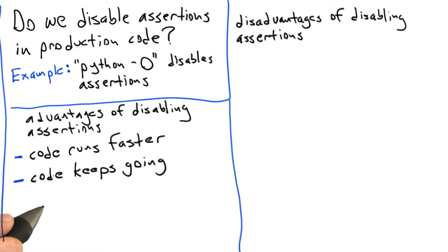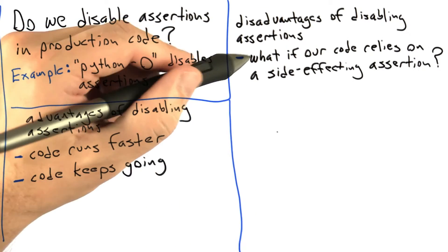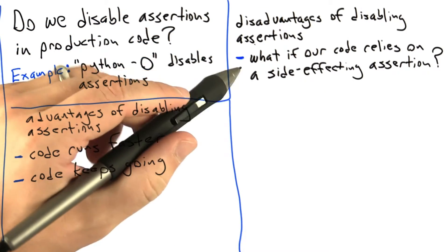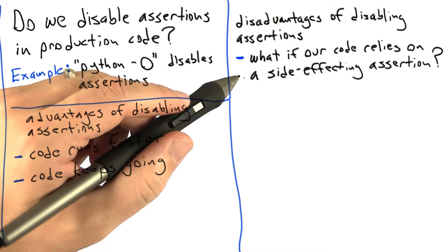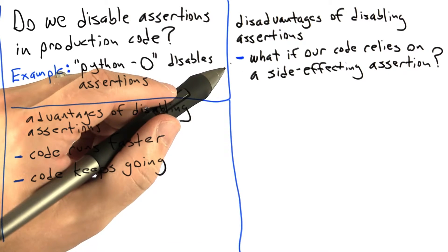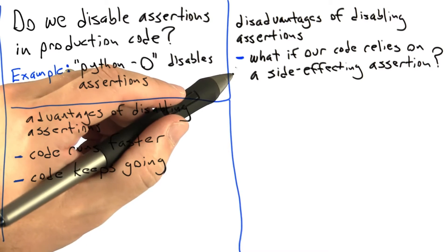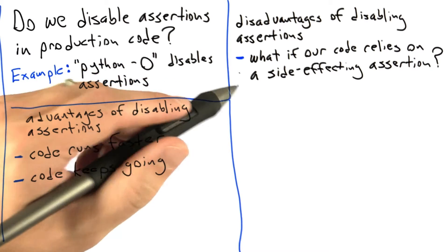So now let's move to disadvantages of disabling assertions in production code. If our code happens to rely on some side effect performed by an assertion, that is to say, if whoever wrote the code that we're using has violated one of the rules for assertions that I gave you, then turning off assertions is going to break the code.